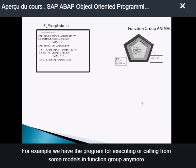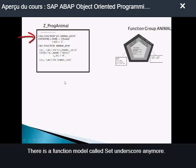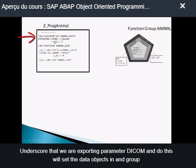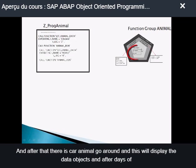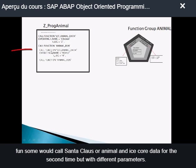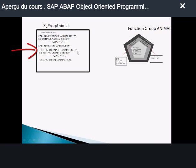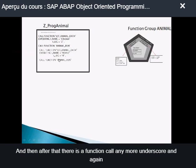For example, we have a Z-program for calling function modules in function group animal. In the Z-program, there is a function module call to set_animal_data with exporting parameters 'chicken' and 'two'. This sets the data objects in function group animal. After that, there is a function module call to animal_run, which displays the data objects. Then, set_animal_data is called a second time with different parameters, followed by another call to animal_run.